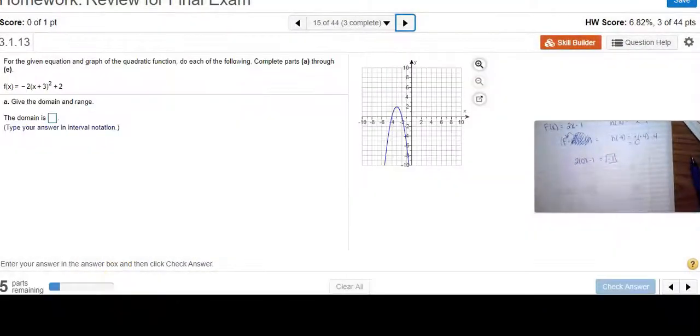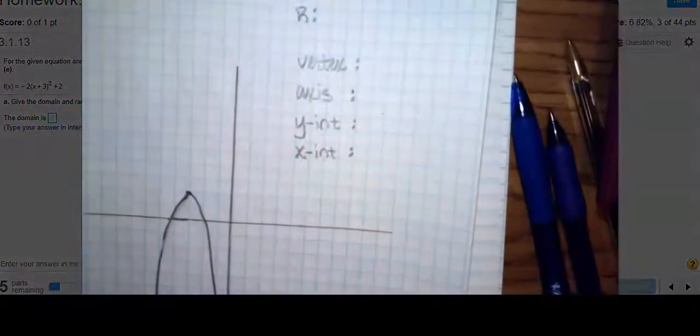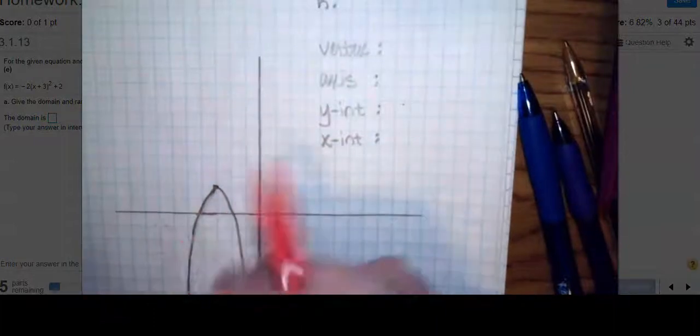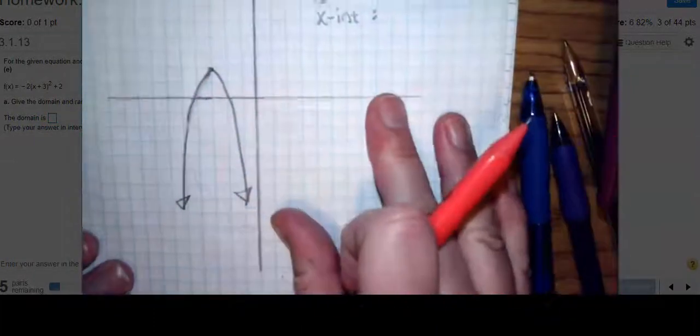We have complete parts A through E. We have a quadratic function. I drew this pretty picture and outlined what we're supposed to find. Here is my parabola. I sketched it. I want to know what its domain and range is.